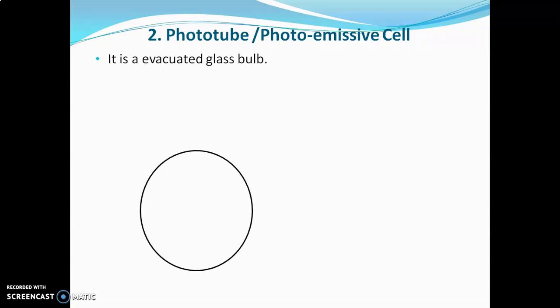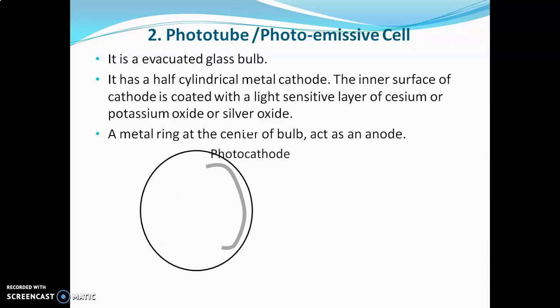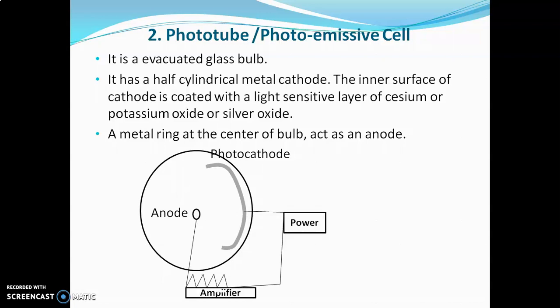The phototube consists of an evacuated glass bulb with a half-cylindrical metal cathode whose inner surface is coated with a light-sensitive layer of cesium, potassium, or silver oxide — called the photocathode. A metal ring at the center acts as the anode. The cathode and anode are connected through an external circuit with an amplifier. When light hits the photocathode, electrons are ejected and attracted towards the anode, generating current proportional to the incident light.